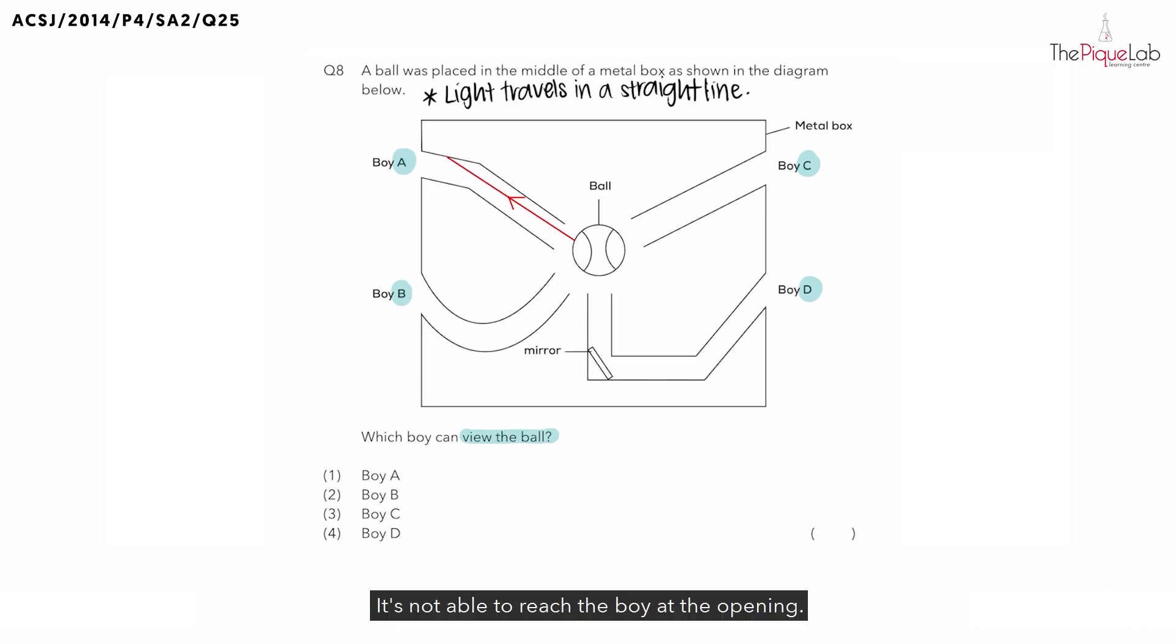It's not able to reach the boy at the opening. Why? Because since light travels in a straight line, the light actually gets blocked by the metal box, preventing the boy from seeing the ball. So boy A is not possible.